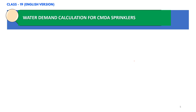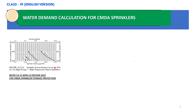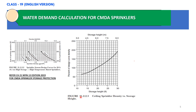So we determine the density and area from this graph for Class 4 commodity: that is 0.3 gpm per square feet and 2000 square feet area of sprinkler operation. Now we will adjust the density by using figure 21.2.3. On the x-axis it shows storage height in feet and on the y-axis it shows percent of design curve density. So we will adjust the density — I will just show it to you.